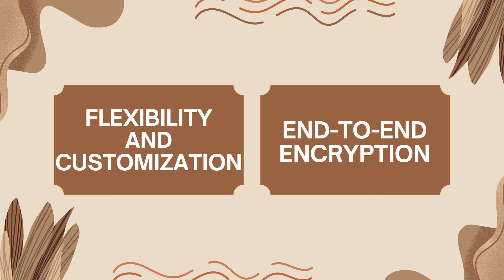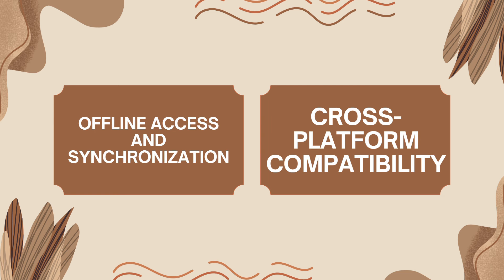Two, end-to-end encryption. Security is a priority for AnyType, which employs end-to-end encryption for all data stored and shared within the platform. This ensures that sensitive information remains protected from unauthorized access, making it suitable for users prioritizing data security and privacy.